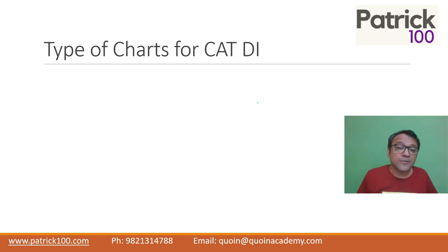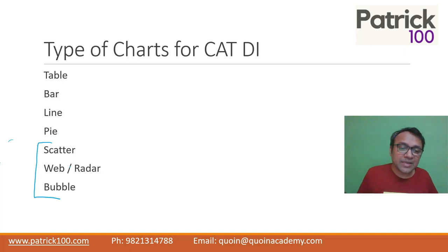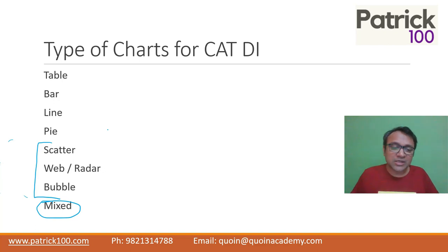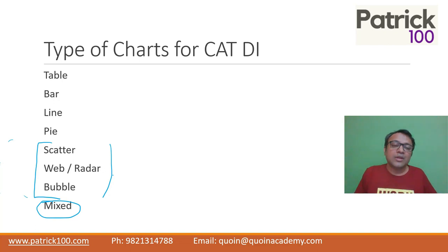What are the different chart types that are important for DI? Almost all types: table, bar, line, pie, scatter, and web or radar. Scatter plots, web/radar charts, and bubble charts have come in the CAT exam in the past, though they are not very common in other exams. Mixed types — any mixture of these — are also very common. We normally focus only on bar, line, and pie charts and don't get used to the others. They're not difficult, but it makes sense to get comfortable with them so that if they come in the exam, you can solve quickly. Try solving different types of charts to get comfortable. Thank you.